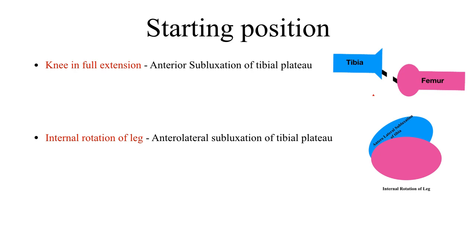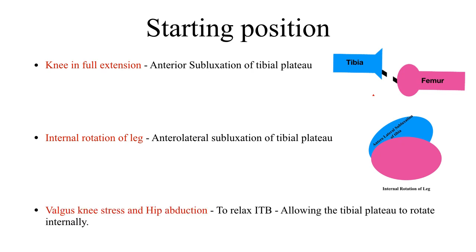After the knee is held in full extension, which causes anterior tibial subluxation, the next step is to recreate the lateral subluxation of the tibial plateau by internal rotation of the leg, causing anterolateral subluxation. The next step is to relax the iliotibial band, which is the structure that causes reduction of the subluxation. Relaxation of the iliotibial band is achieved by holding the hip in abduction and giving a valgus stress to the knee joint, both of which keep the iliotibial band loose so that anterolateral subluxation can be recreated.